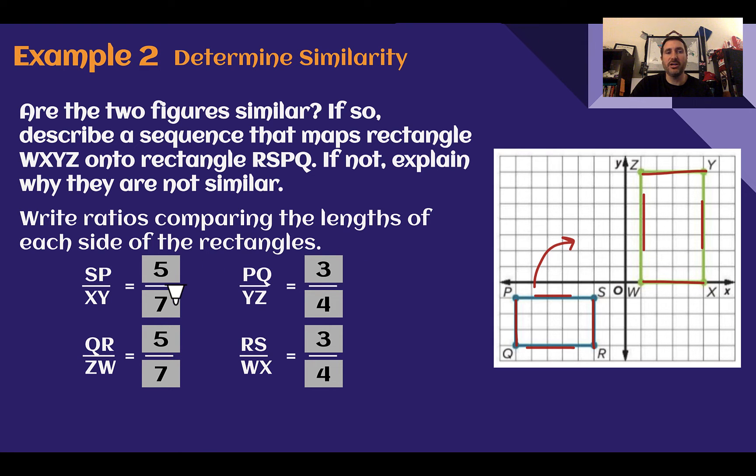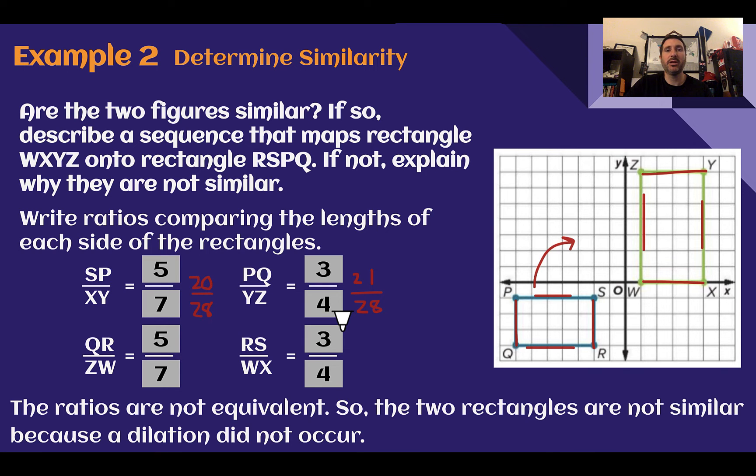Are those the same fraction, the same ratio? Let's change them to common denominators. 7 fourths would be out of 28. 3 fourths, I had to multiply this by 7, so 3 times 7 would be 21. I had to multiply this number by 4, so this would be also by 4. 20 out of 28 compared to 21 out of 28. They are very close. However, since they are not exactly equal, these would not be similar. So these rectangles are not congruent, they're not the same size, and they are not similar since the dilation did not happen.